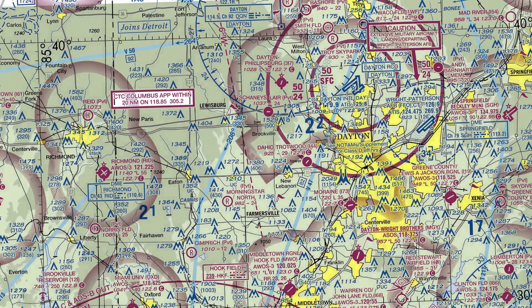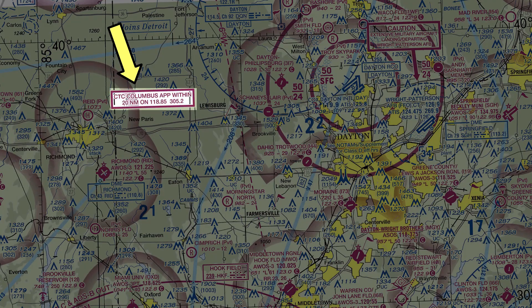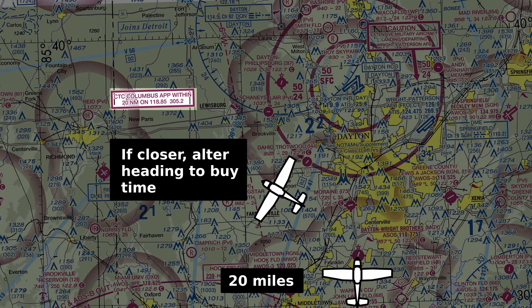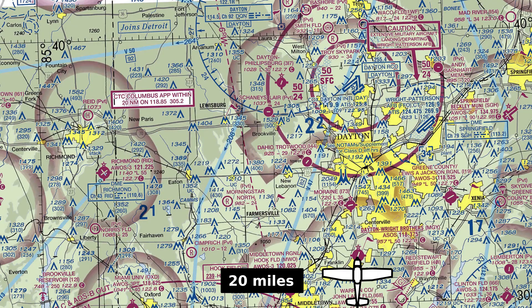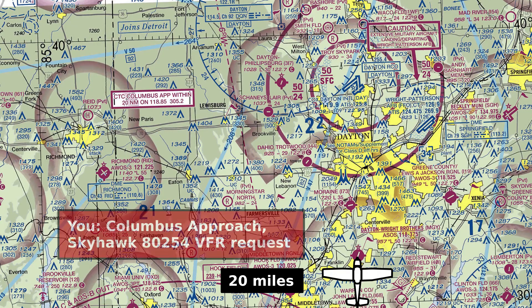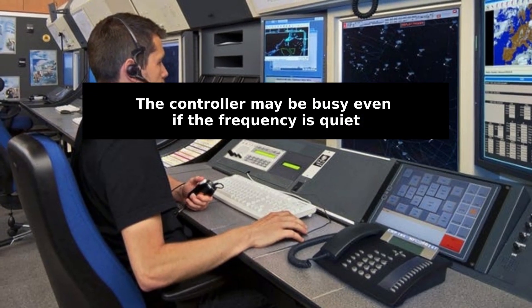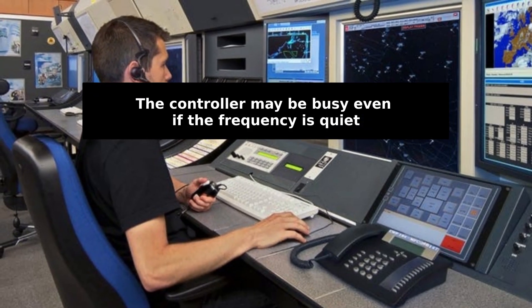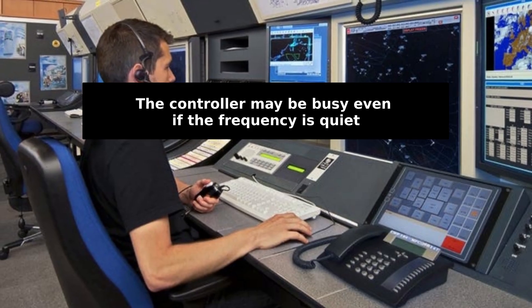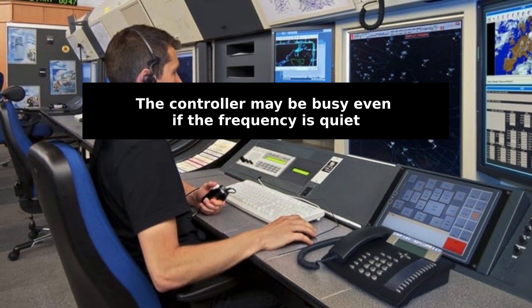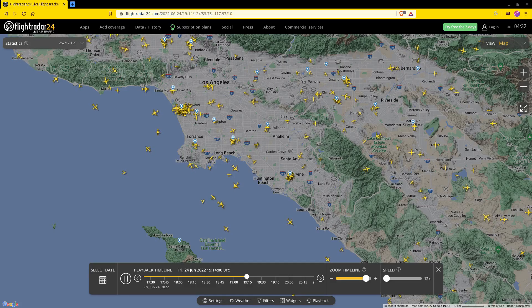Make the initial contact with ATC when you're 20 miles out, or as soon as practical if you're already closer than that. I like to start the conversation by saying, 'Columbus Approach Skyhawk 80254 VFR Request.' This gives the controller time to finish up any work he may be doing on other frequencies or phone lines, and give me his full attention so he's not overwhelmed by a whole bunch of random information from a new airplane all at once.